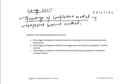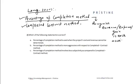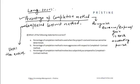In the percentage of completion method, we recognize revenue, expenses, and gains in each accounting period. However, in the completed contract method, we do not recognize gain until the entire cost has been covered.